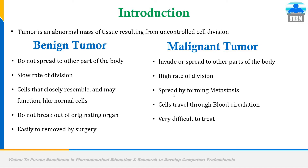Malignant tumor cells spread from one part to another part via the lymphatic system by forming metastasis — metastasis is nothing but the spreadability of that cancerous cell. Benign tumor cells do not break out of the originating organ, whereas malignant tumor cells travel through the blood circulation from one organ to another. The benign tumor can be easily removed by surgical treatment, whereas malignant tumor is very difficult to treat. For treatment of malignant tumor, we have various approaches like chemotherapy, radiation therapy, and surgery.